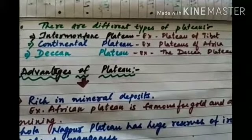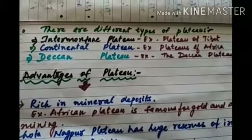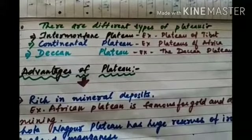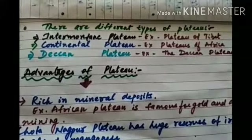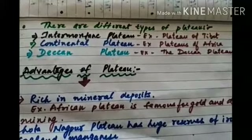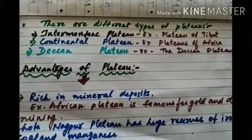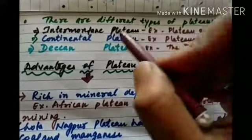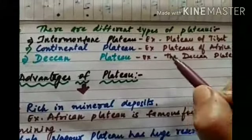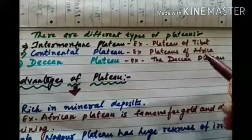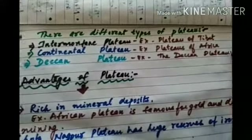The last type is the lava plateau. When lava flows out of fissures and spreads over extensive areas, lava plateaus are formed. The example is the Deccan plateau.